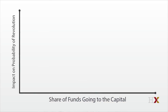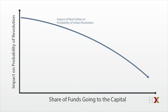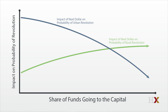We'll put on the x-axis the share of government goodies that are going to the capital city. Now we're going to assume a curve that represents the impact that an extra dollar spent in the city has on increasing your probability of survival in office. It starts high and then declines, because eventually the urbanites get a little sated with bread and circuses.